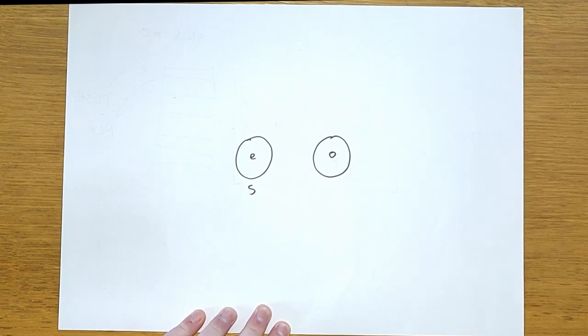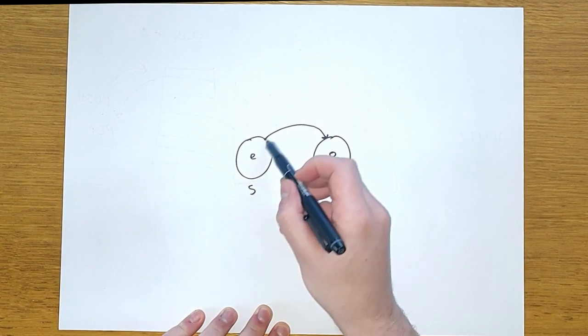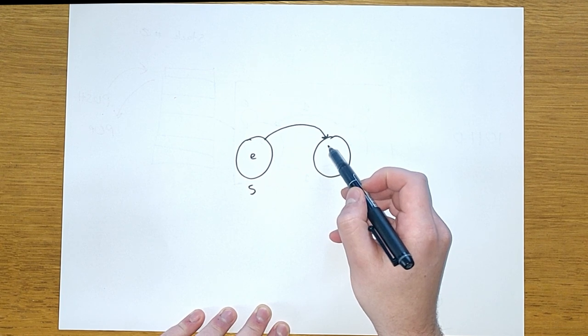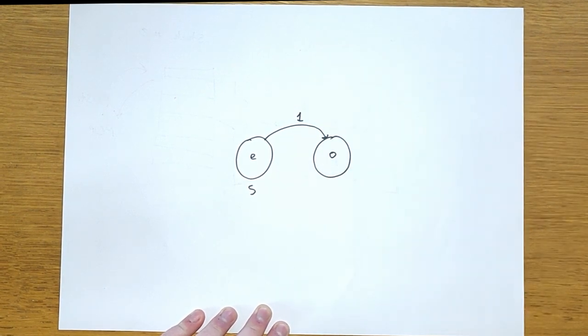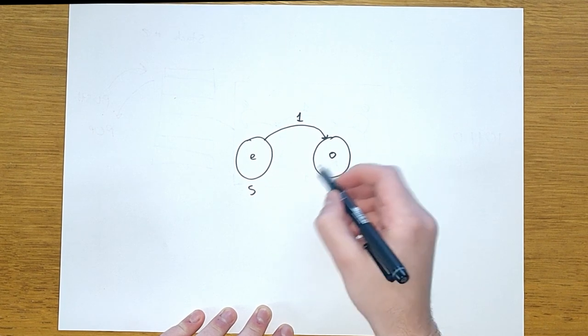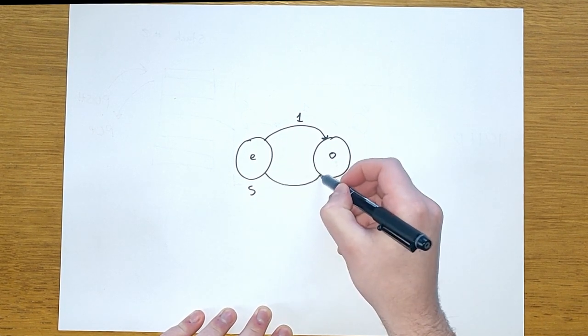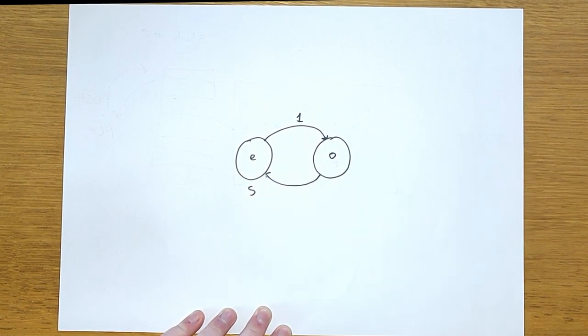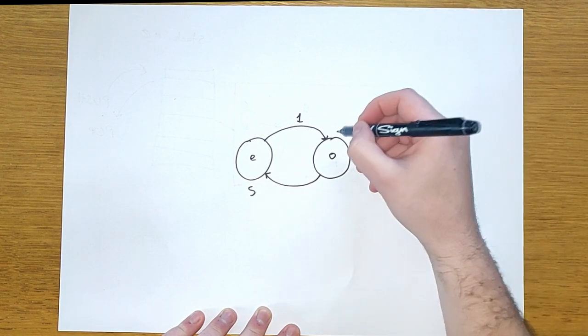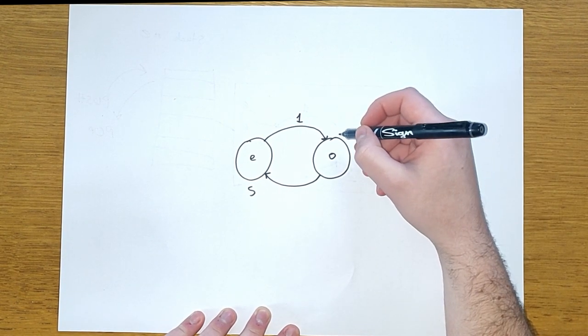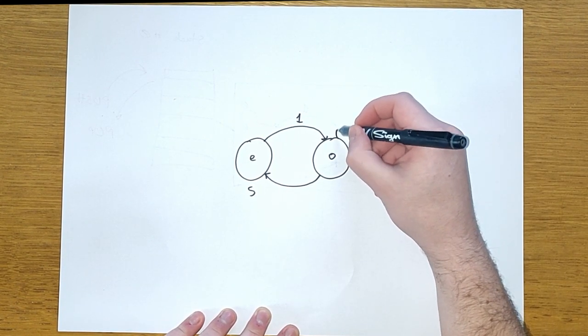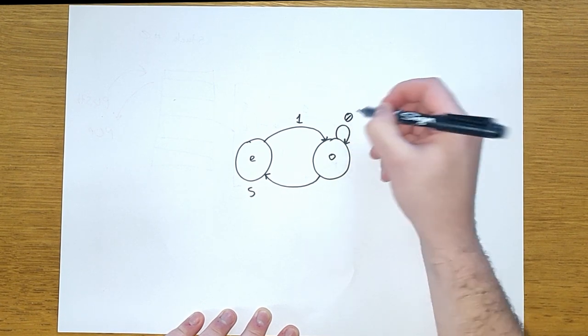And we had four transitions. If we were even and saw a one, we'd transfer into the odd state. If we were in the odd state and saw another one, we'd transfer into the even state. And if we saw a zero, it didn't have any effect on our result at all, so we just remained in the current state, whichever side we were in.